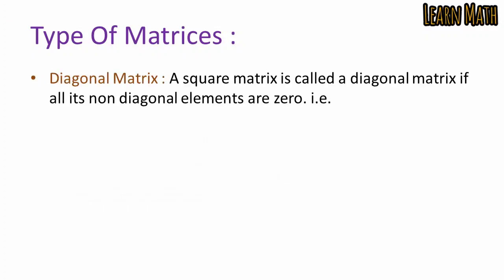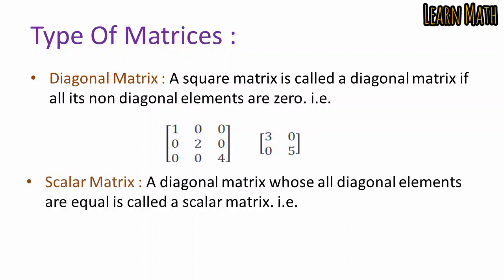A diagonal matrix is a square matrix in which all non-diagonal elements are zero. In the given example, all off-diagonal elements are zero but the diagonal elements 1, 2, 4 are non-zero. Similarly, for the matrix [3, 0; 0, 5], the off-diagonal elements are zero while the diagonal elements 3 and 5 are non-zero. This is called a diagonal matrix.